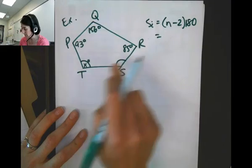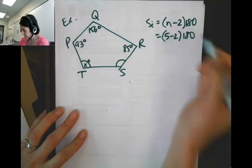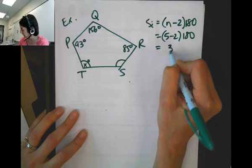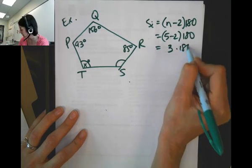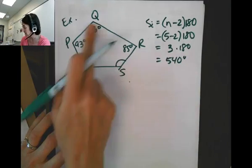So again, our little formula, sum of the interior angles is the number of sides minus two times 180. One, two, three, four, five sides. That's three times 180, 540. The sum of the interior angles for this shape is 540.